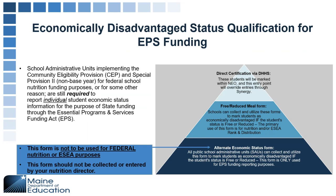This information gets reported for October 1. It should be entered into your system with an effective date prior to October 1 in order to be counted on the October 1 reports. The effective date should be the beginning of the school year. If you have an effective date for economic status that starts after October 1, it will not be counted in the report.